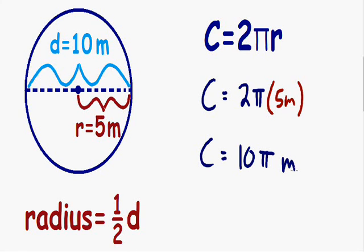So the exact circumference of this circle is 10π meters. But often your teacher or textbook wants your answer in decimal form. To do this we need to round π into a decimal. The approximate value for π is 3.14, so I'm going to plug in 3.14 for π.